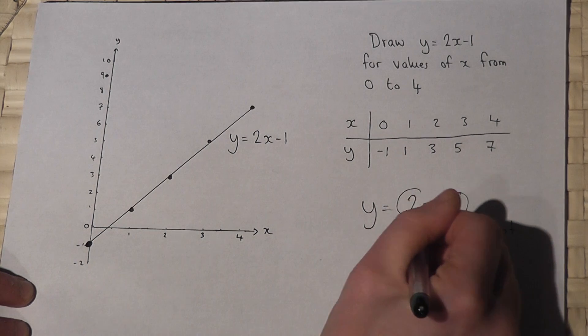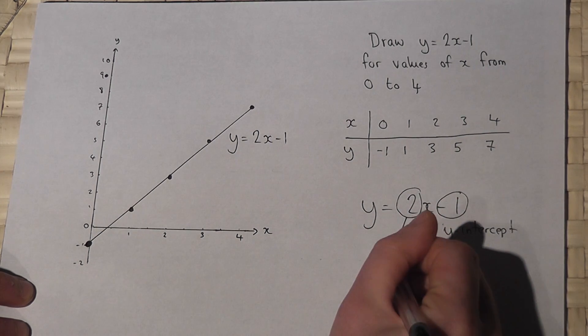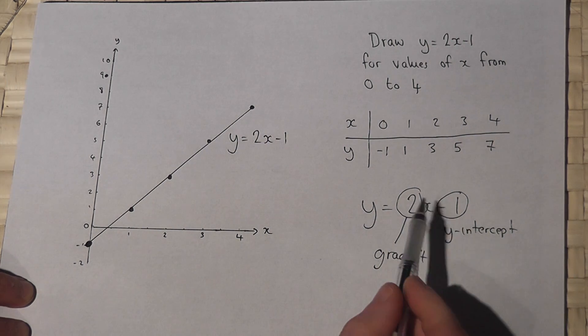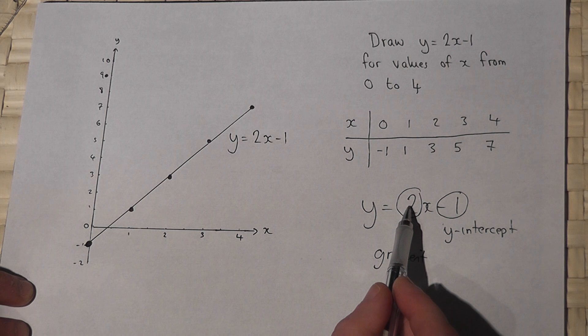This value here, the number before the x, the coefficient, is always the gradient. And a gradient of 2 means across 1, up 2, across 1, up 2.